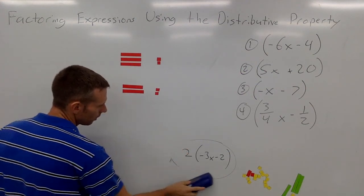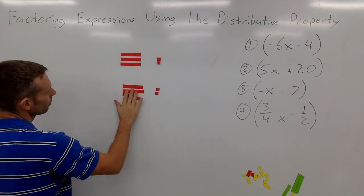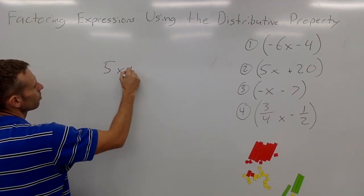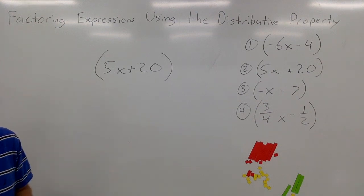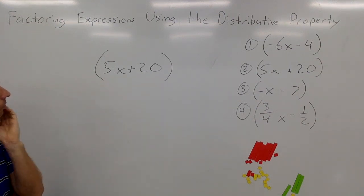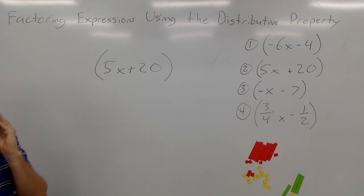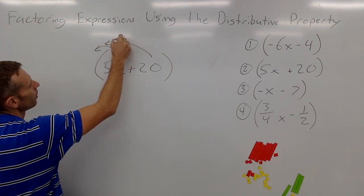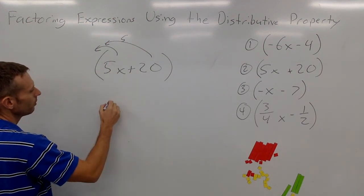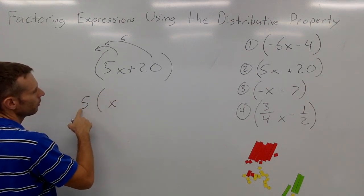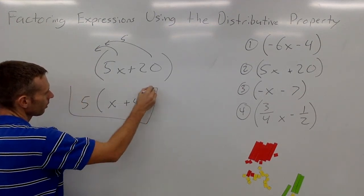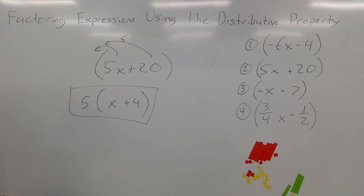Let's try a few more. This time we'll just do the best we can using the numbers. For 5x plus 20, we're looking at these two terms and thinking: what is the greatest common factor of 5x and 20? It looks like it's going to be a 5. We're going to pull out a positive 5. 5x divided by 5 is x, and 20 divided by 5 is positive 4. And here we are factoring this expression.